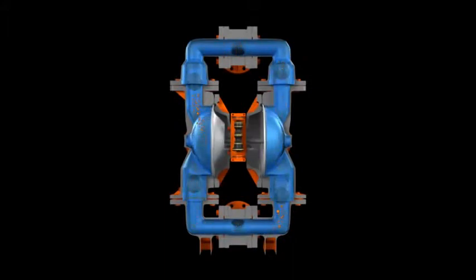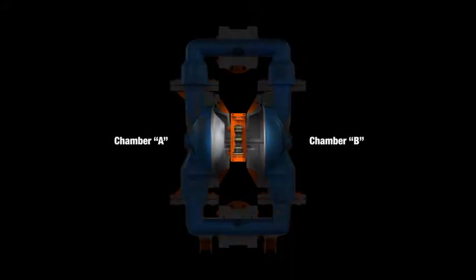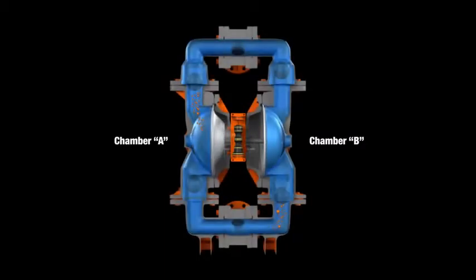The air valve directs pressurized air to the back of diaphragm A. This begins chamber B's suction stroke, which starts as diaphragm B is moved toward the center of the pump, thereby creating a vacuum in chamber B. Atmospheric pressure then forces fluid into chamber B past the inlet ball valve.